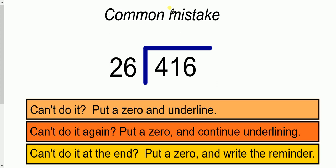They work that out and realize you can only fit one 26 in 41. Because if it was 2, then 26 times 2 would be 52, and 52 is too big. So they realize it must be 26 times 1, so there's only one 26 that can fit in 41. So they write 1 here.